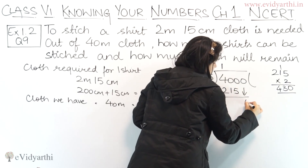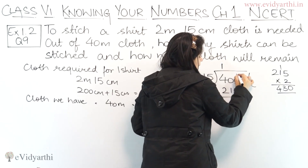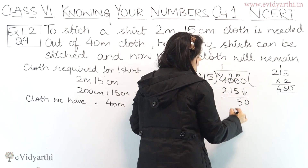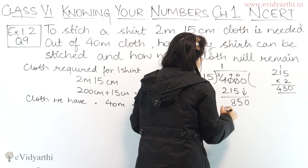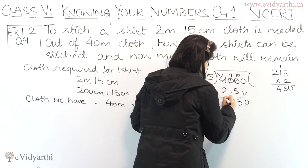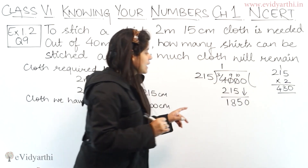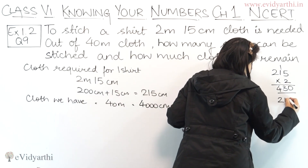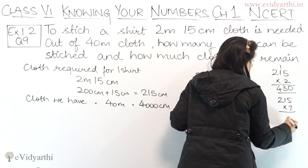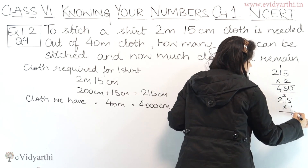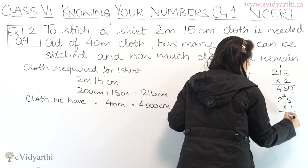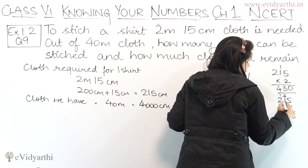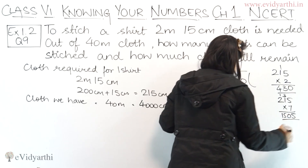Then this becomes 0. Bringing down: 10 minus 5 is 5, this will be 9 and this will be 3. So 9 minus 1 is 8 and 3 minus 2 is 1. We now have 1850. Checking: 215 multiplied by 7 — 7 into 5 is 35, 7 into 2 is 14 plus 3 is 17, 7 into 1 is 7 plus 1 is 8. So 215 into 7 is 1505.